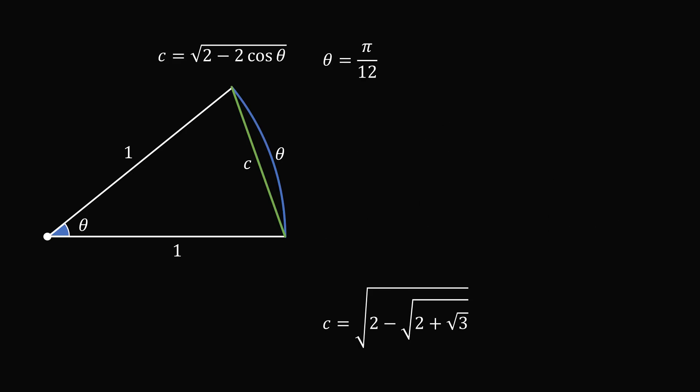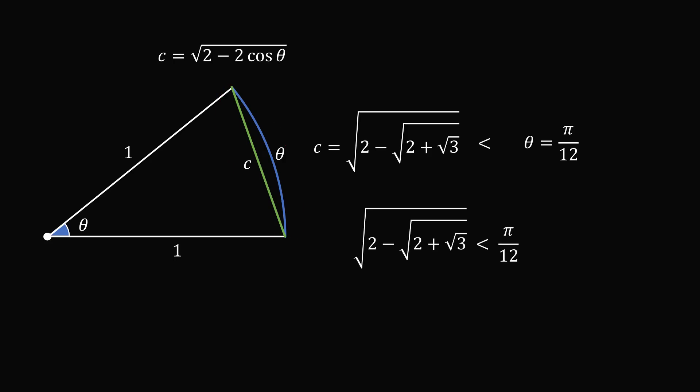So we now have the two quantities that we want to compare. We have this nested square root, and we have this angle pi over 12. From our diagram, we know that theta is larger than this chord. So it will be the case that pi over 12 will be the larger quantity. And we can just put this on the calculator, and we can see it is slightly larger. So this is quite an interesting problem, and I hope you enjoyed this geometric solution.